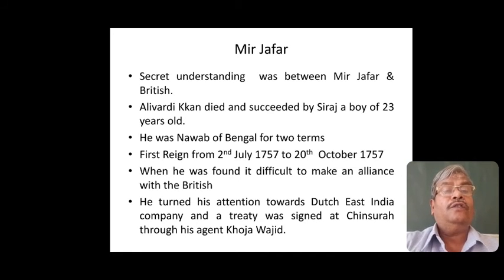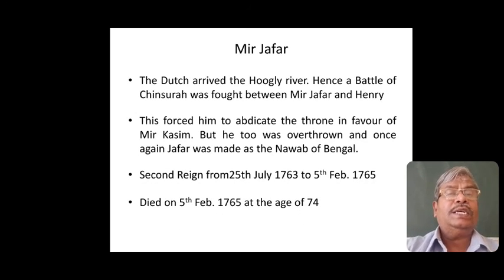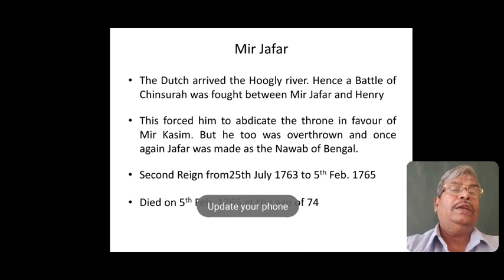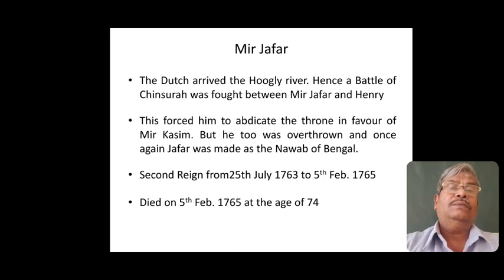Mirjafar was appointed as Nawab for two terms. The first term was from 2nd July 1757 to 27th October 1760. He found it very difficult to maintain his alliance with the British, so he turned his attention towards the Dutch East India Company. A treaty was signed at Chinsura through his agent Koja Vajid, and as a result, the Dutch arrived on the Hugli River. A battle was then fought at Chinsura, forcing Mirjafar to abdicate in favour of Mir Kasim, who was also overthrown. Mirjafar was reinstated as Nawab for his second term, from 25th July 1763 to 5th February 1765. Mirjafar died on 5th February 1765 at the age of 74.